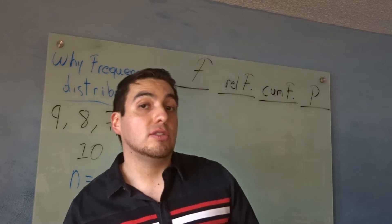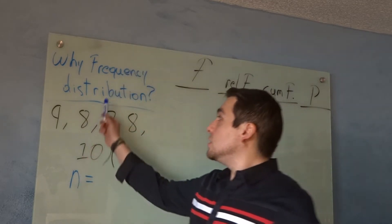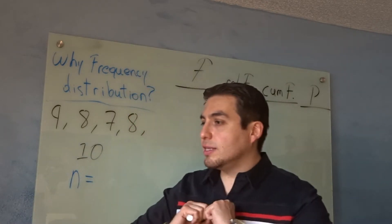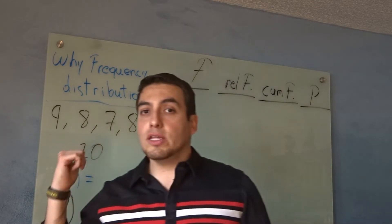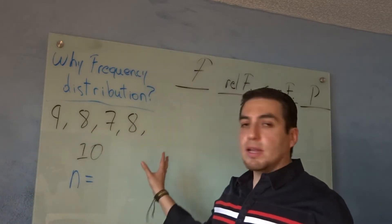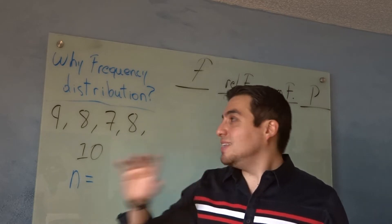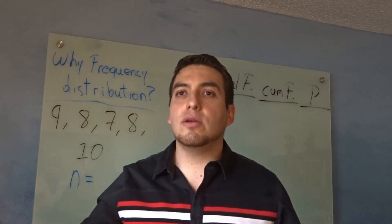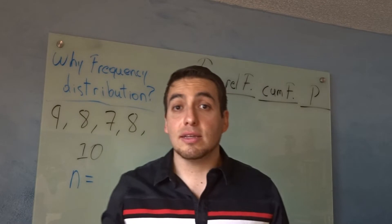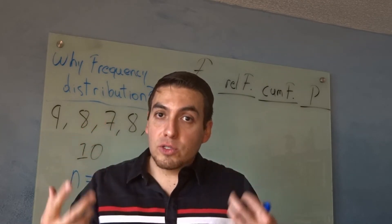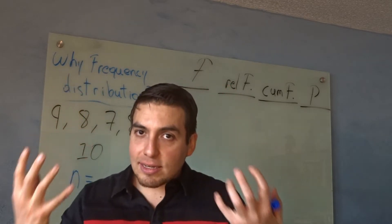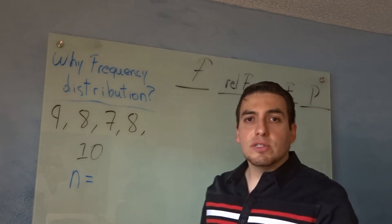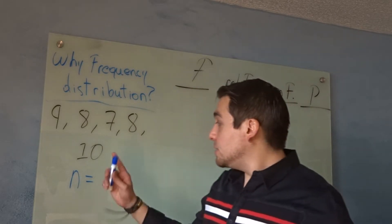The most basic descriptive statistic is the frequency distribution. Why frequency distribution? When you collect data from a group of people, you plug in the data spread out. Say those are the grades for the first exam of five students — it doesn't look bad now, but with grades from 100 people it's going to look super messy. You want a way to describe the data in a more nicely organized way, and that's what the frequency distribution does.